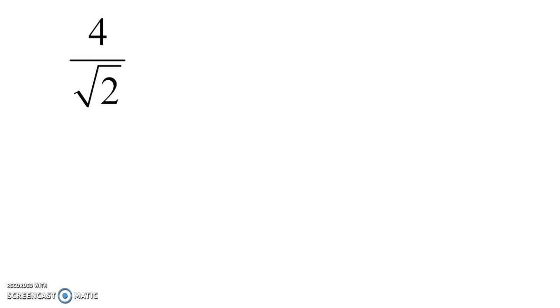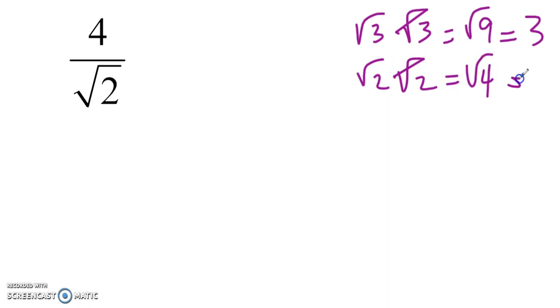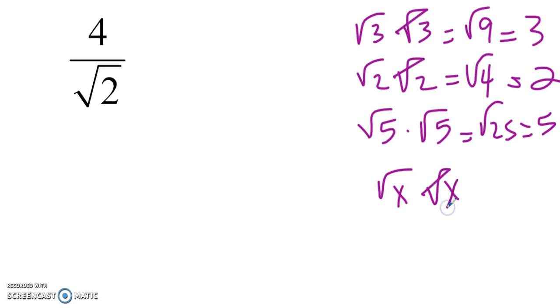If you realize, any radical by itself, for example, the square root of 3 times the square root of 3 is going to be the square root of 9, and the square root of 9 is 3. The square root of 2 times square root of 2 gives you the square root of 4, which is 2, and so on. The square root of 5 times the square root of 5 equals square root of 25, which gives you 5. So if I take the square root of x times square root of x, it gives me square root of x squared, which is x.